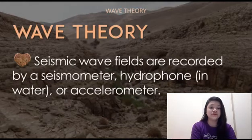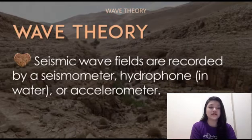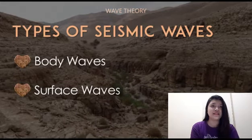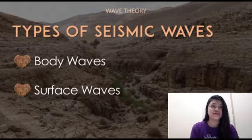Seismic wave fields are recorded by a seismometer, hydrophone in water, or accelerometer. There are two types of seismic waves: the body wave and the surface wave. First, the body wave.